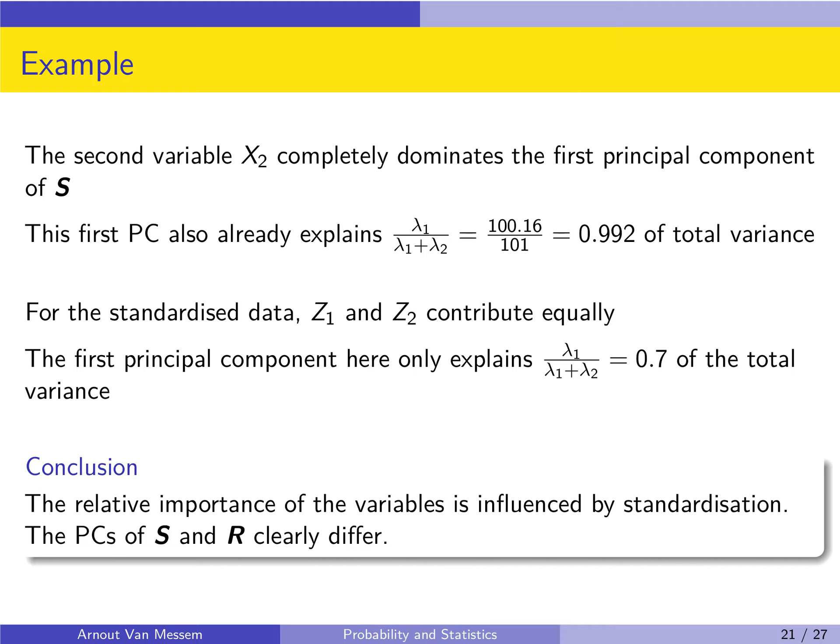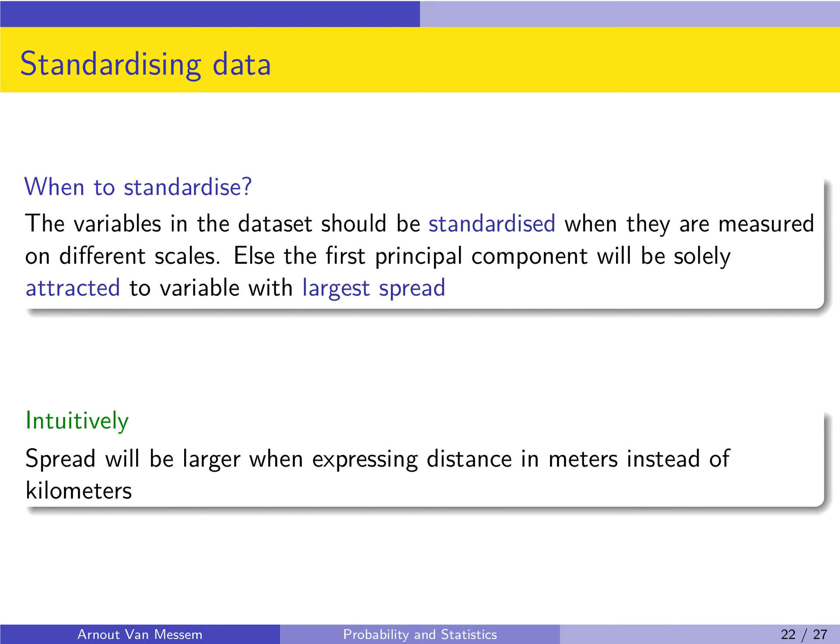The principal components of S and R are clearly different, and there is no rule to convert the principal components of S into those of R. Variables should be standardized if they are measured on different scales; otherwise, the first principal component will be completely attracted to the variable with the largest spread. In practice, it will never hurt to standardize, so if uncertain, it is always safer to use standardized data.